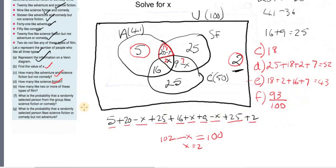And then part G is, what is the probability that a randomly selected person like science fiction or comedy, but not adventure? Okay. Well, that includes these people here and these people and these people. Just nobody in the adventure.